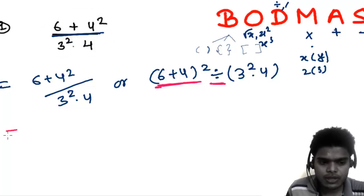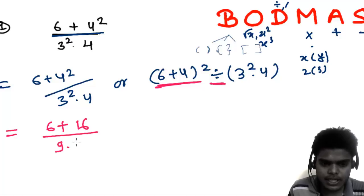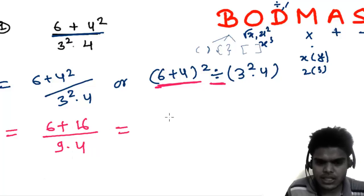So in that way you can go one by one. 6 plus 4 squared is 16, and then divided by 3 squared, which is 9, times 4. And then further, 6 plus 16, that is 22, and 9 times 4 is 36.